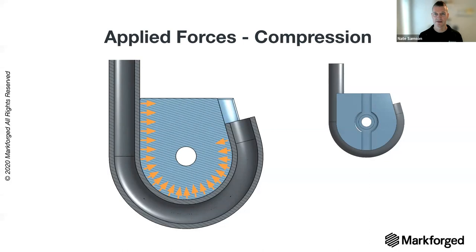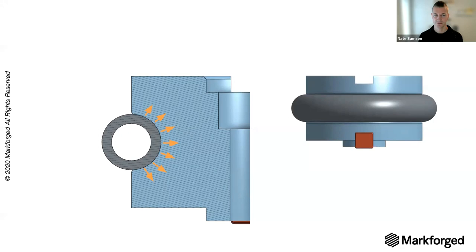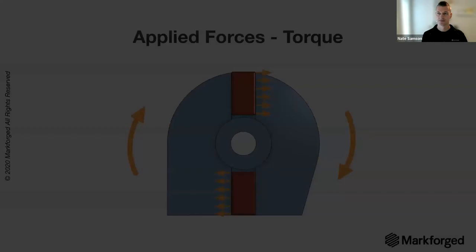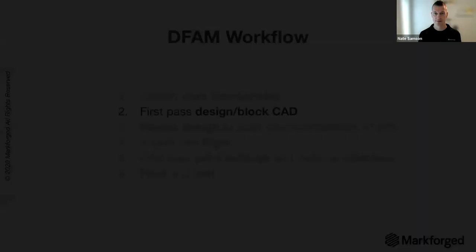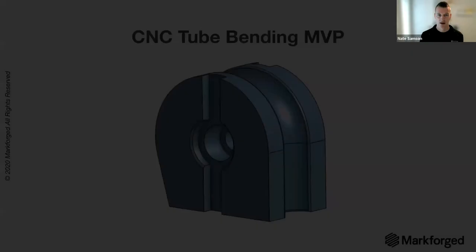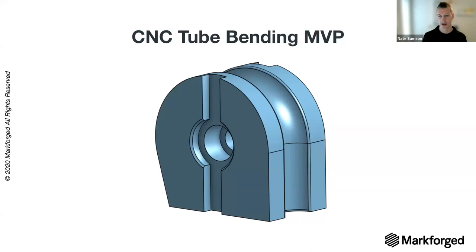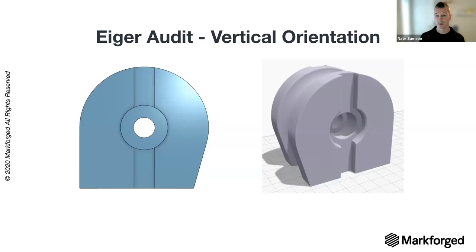Looking at applied forces: there are significant compressive forces from the tube being wrapped around the die, highlighted with arrows in cross-section. There's also torque from machine keys turning the die to create the bent tube structure. The first-pass MVP CAD model shows how the part would be produced traditionally — CNC machined from a hardened tool steel. But since we're producing this with additive, we need to take that into consideration. Bringing the file into Eiger, our slicing platform, we explore a couple of orientations.